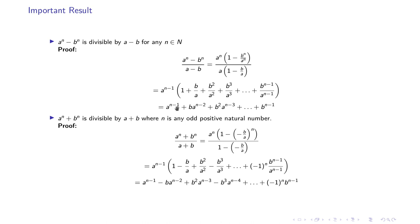If we multiply aⁿ⁻¹ with the terms inside the parenthesis, we get a polynomial — that's why we can say it is divisible by (a minus b). The second result is: aⁿ plus bⁿ is divisible by (a plus b) where n is any odd positive natural number. This again results in a geometric progression, and when we multiply we get a polynomial, confirming that (a plus b) is a factor.